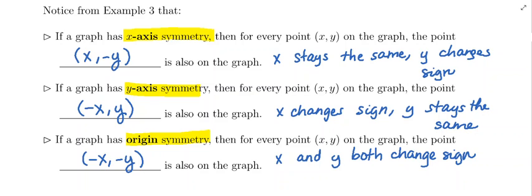If a graph has y-axis symmetry, if you start with a point (x,y), that point is going to get sent to (-x,y), meaning x will change signs and y would stay the same.